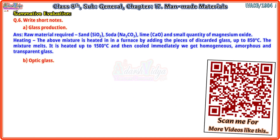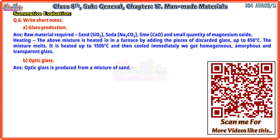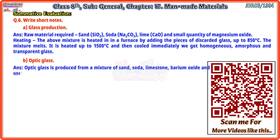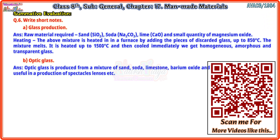Second: Optic glass. Optic glass is produced from a mixture of sand, soda, limestone, barium oxide, and boron. This type of glass is useful in the production of spectacles, lenses, etc.